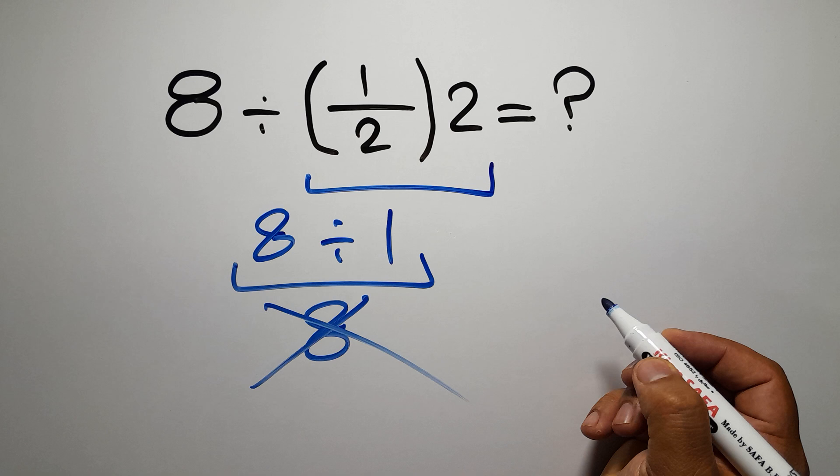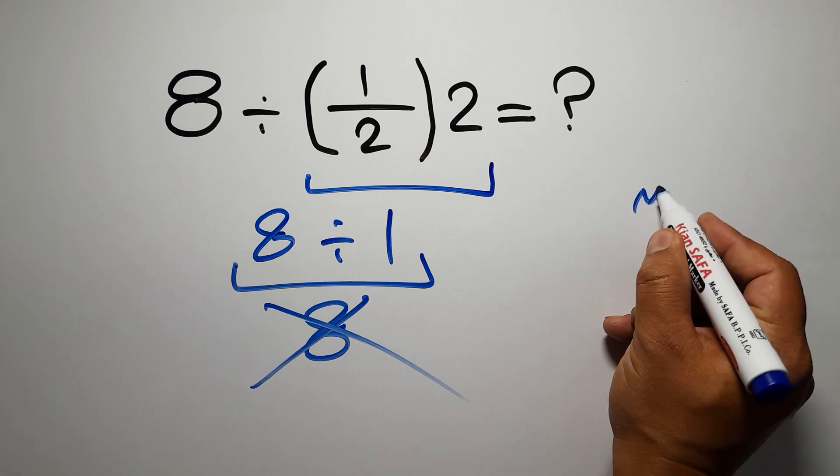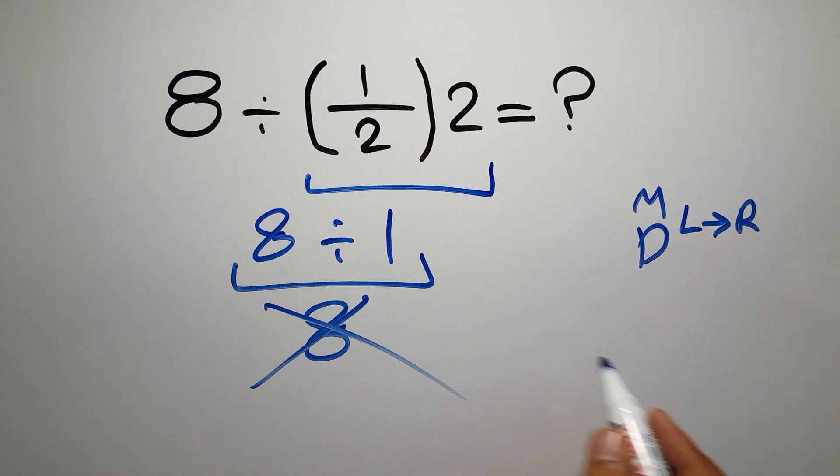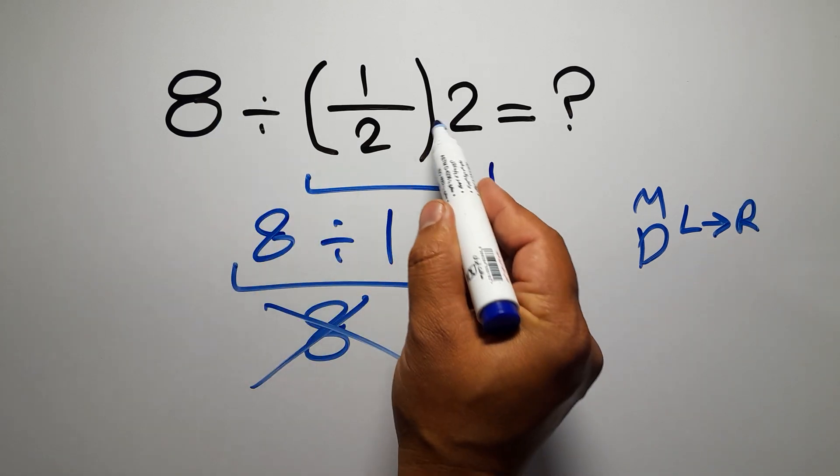because according to the order of operations, multiplication and division have equal priority, and we have to work from left to right. So first, we have to do this division, not this multiplication.